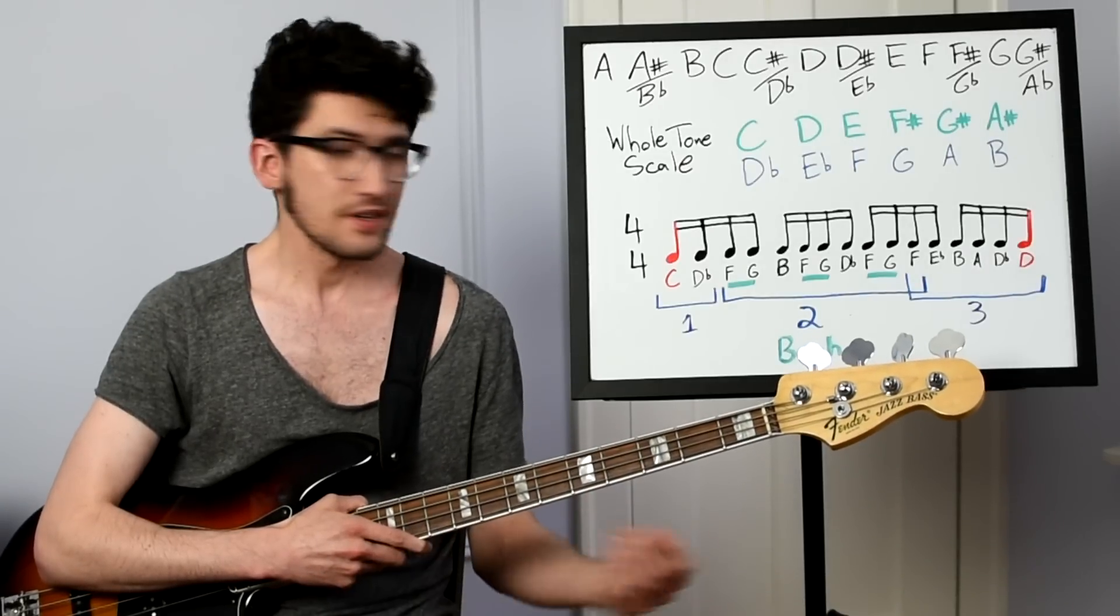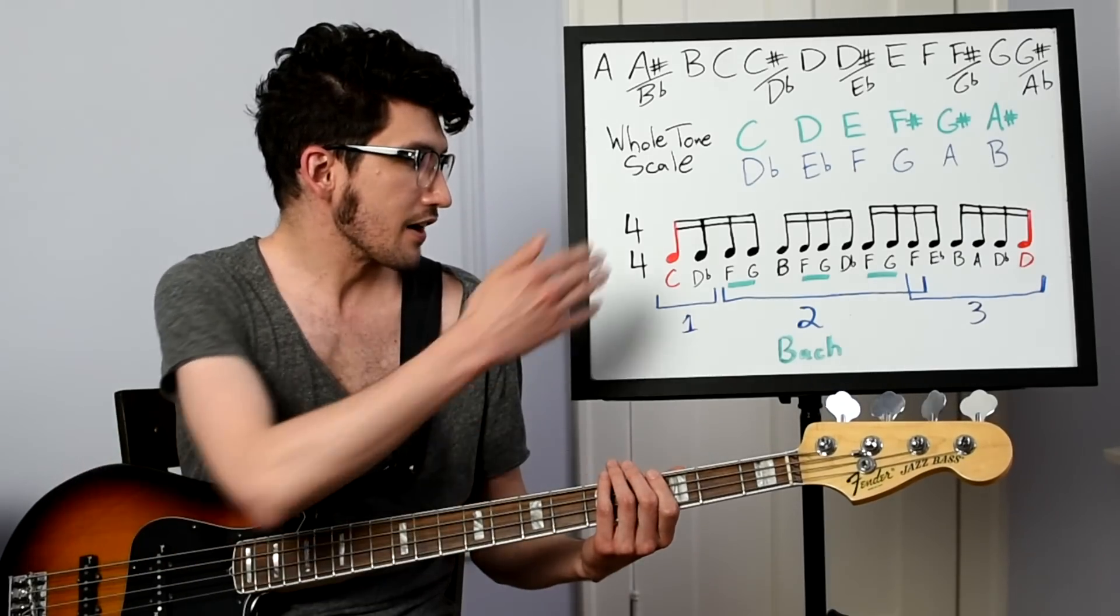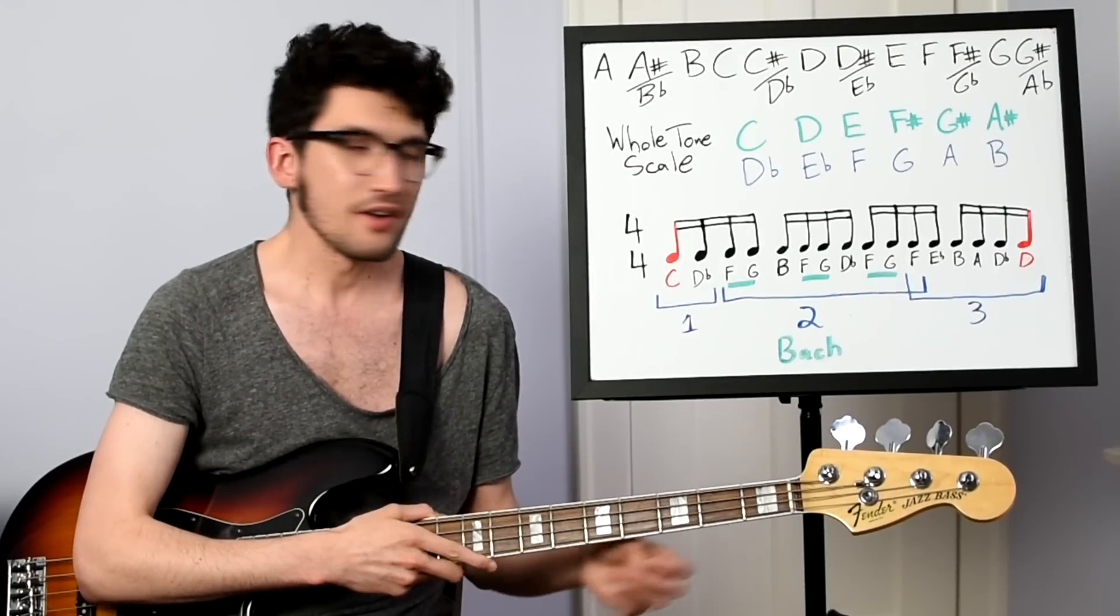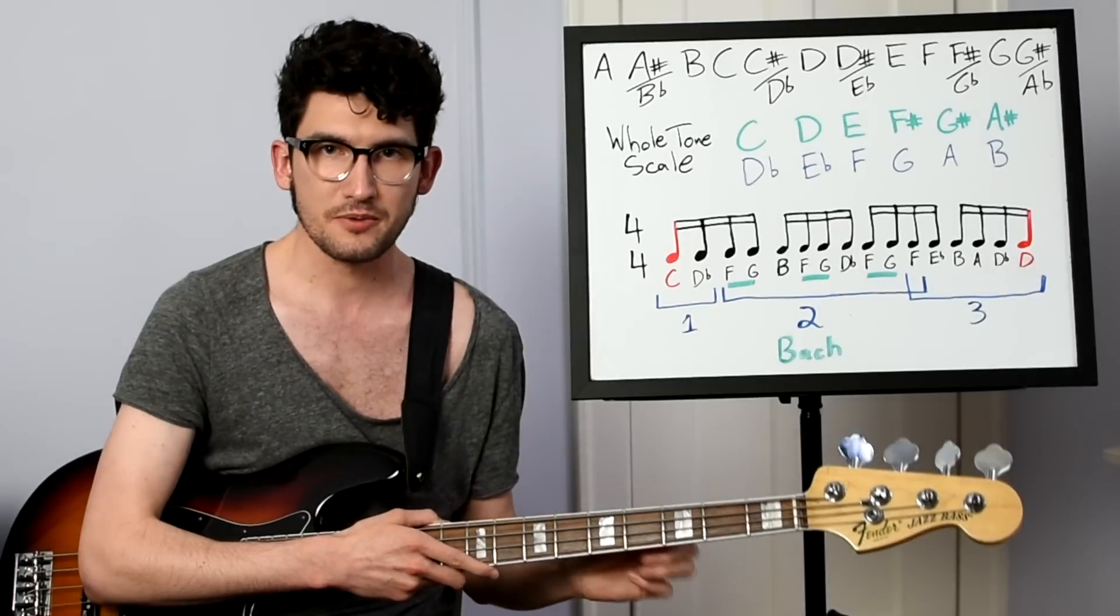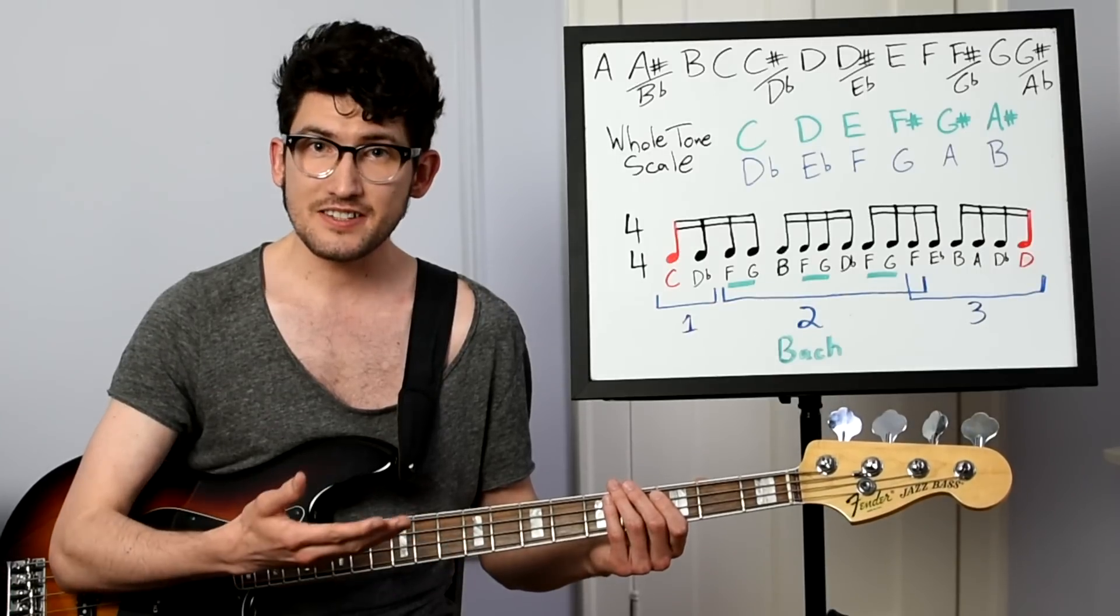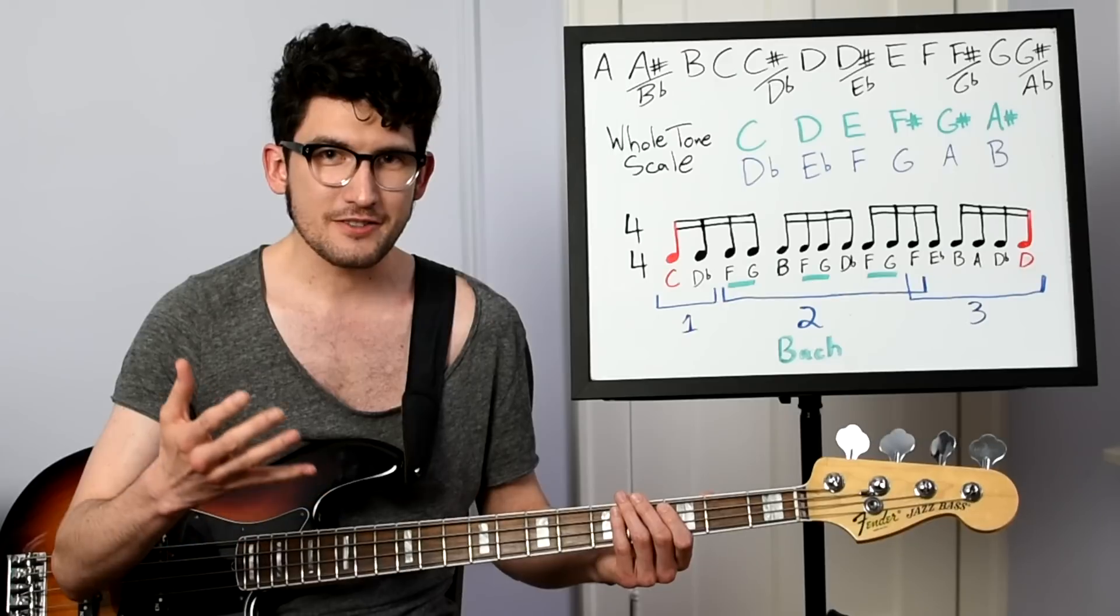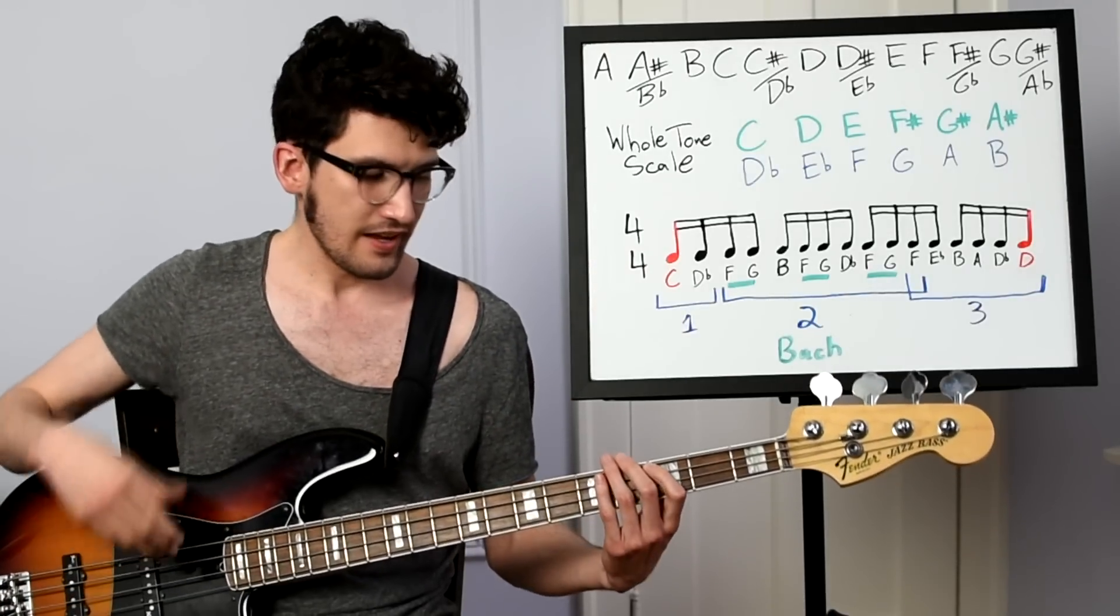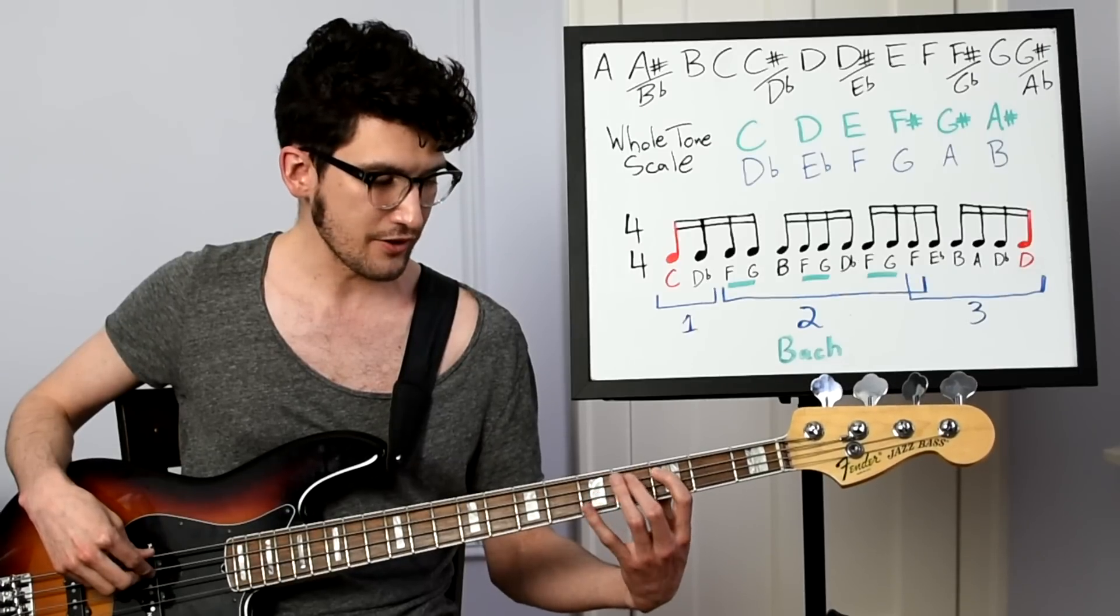Moving on to the actual riff, if we look at it written up here, the first thing I'm sure you're probably noticing is that there are two red notes at the very beginning and at the very end. I'm using this to show that those two are notes that are not in the D-flat whole tone scale that we are primarily using. But we're going to talk more about that in a little bit. Now, I think it's easiest to divide this riff into three different sections. The first section is very simple and very short. It's just two notes. C and D-flat.